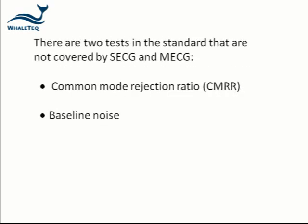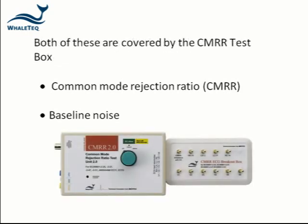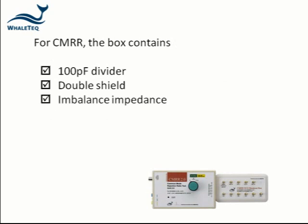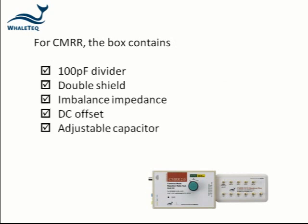There are two tests in the ECG standards that cannot be performed with the SECG or the MECG. These are the Common Mode Rejection Ratio, or CMRR test, and the baseline noise test. For these tests, the CMRR test box should be used. For CMRR, the box contains the 100 pF divider, double shield, imbalance impedance, DC offset, and adjustable capacitor as required by the standard.